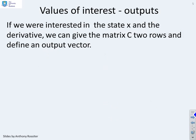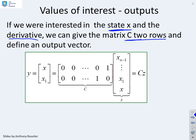Now what happens if we're interested in more than one value? So I might be interested in the state x and also the first derivative. Then we can define a matrix C which has got two rows, one row for each state of interest or each output. You can see here my C matrix has got two rows. The top row will extract x and the second row will extract x_1. So if I write y equals Cz, that gives me an output with my two values of interest.